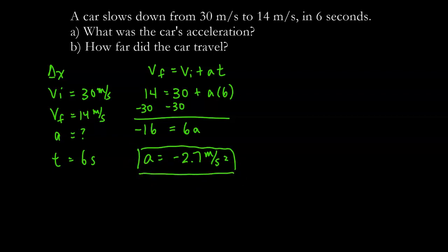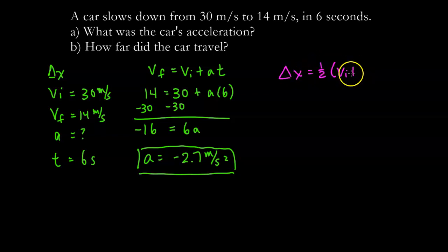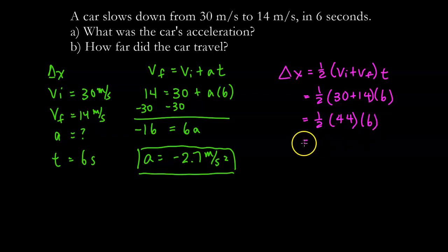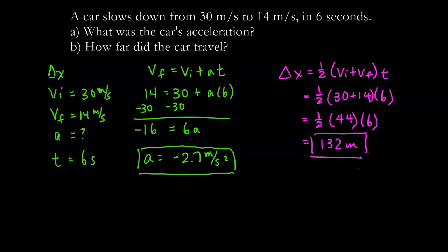For part B using the kinematic equation: delta x equals one half times (VI + VF) times T. That's one half times (30 + 14) times 6, which is one half times 44 times 6, giving us 132 meters — the same answer we got using the graph. Sometimes it's easier to use a graph, sometimes it's easier to use kinematic equations.